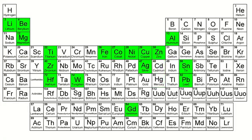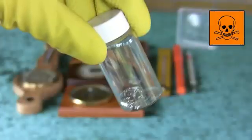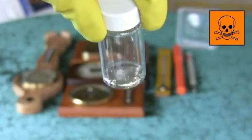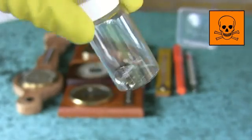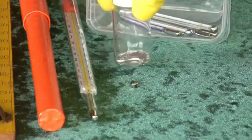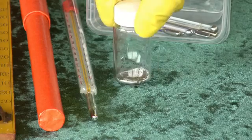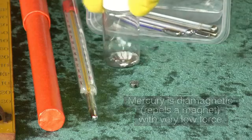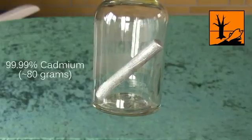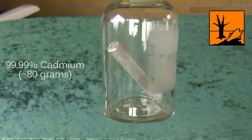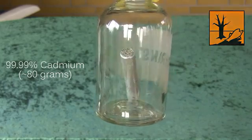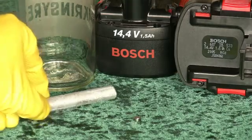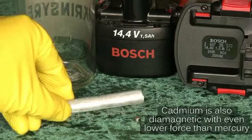How about some toxic ones? This is mercury with some little glass fragments floating around on it. I haven't figured out how to filter it yet.